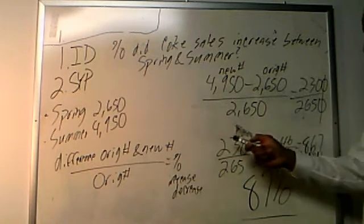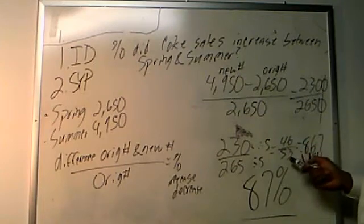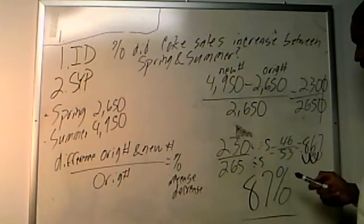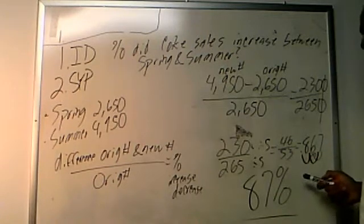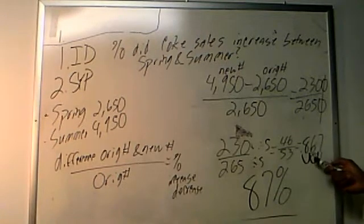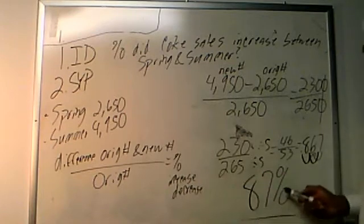And we divided that by our original number and we get 2,300 over 2,650. Okay. And so we reduced that down, and then we divided 46 by 53 and we get 0.867. We rounded that up to our answer here, 87%.